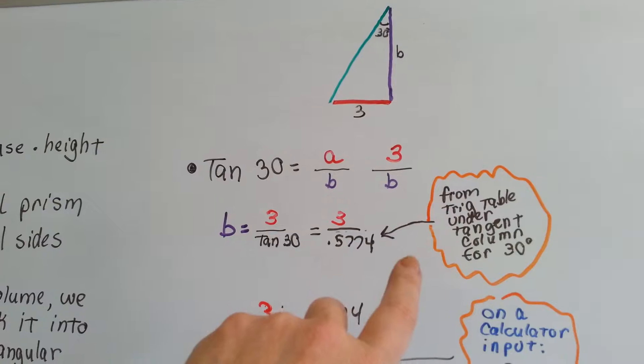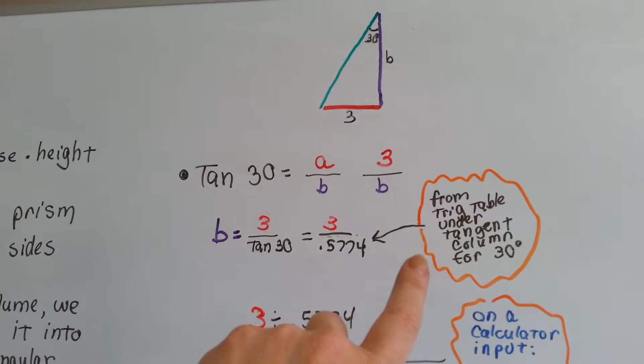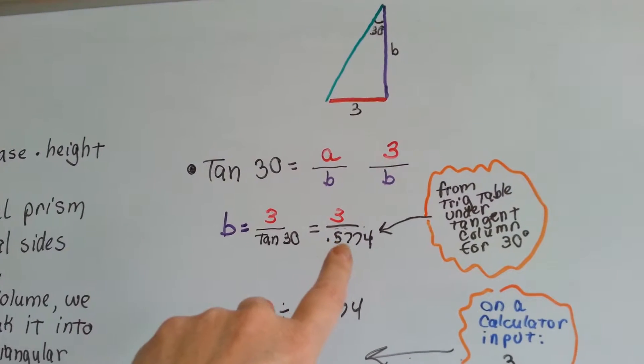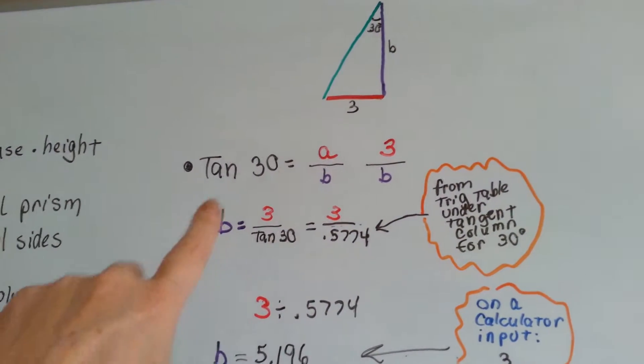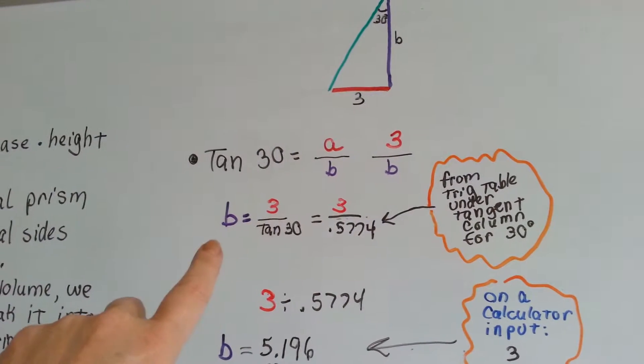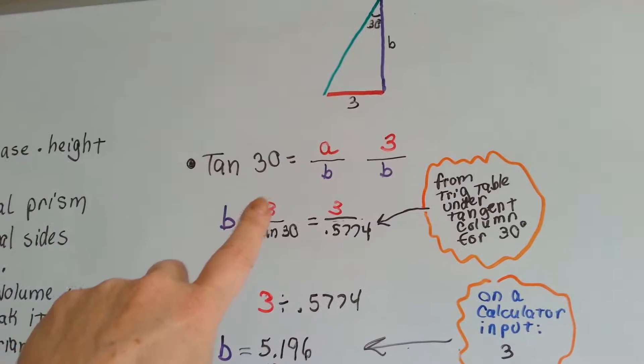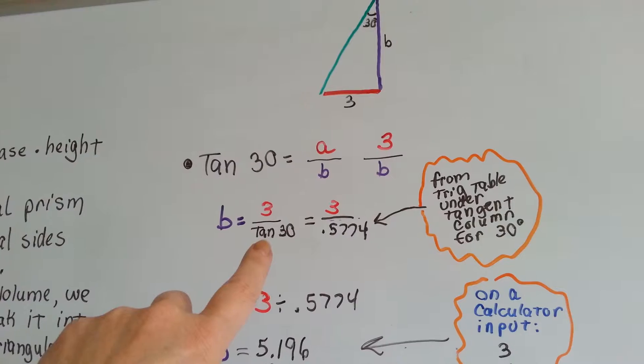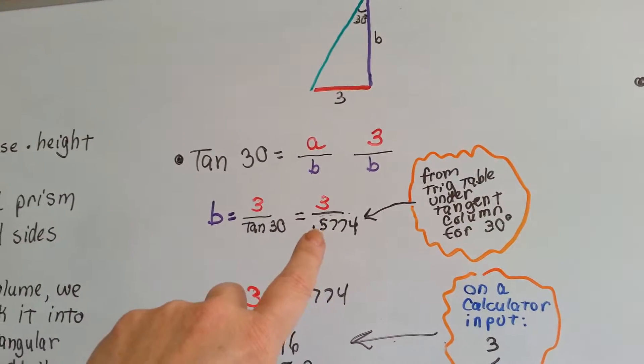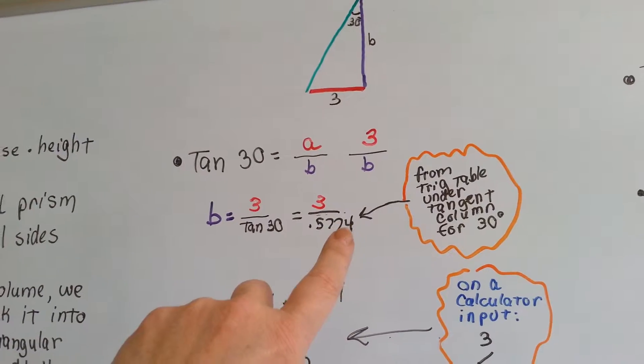If you don't have a scientific calculator, you can go to the back of your book or online and get a trig table, and under the tangent column for 30 degrees you'll find that decimal point. We're rewriting the equation from this to this. b is equal to 3 over tangent 30. So 3 is over 0.5774.